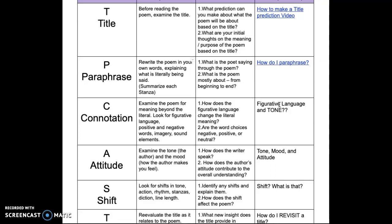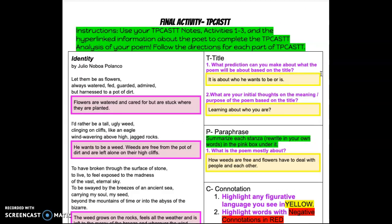So connotation is when you examine the poem for meaning beyond the literal and look for figurative language, positive and negative words, imagery, sound elements. This is where we're really going to combine our figurative language and our tone stuff together. When you see connotation, think annotations because this is when you're really going to sit down and interact with this poem some more and start doing your highlights.